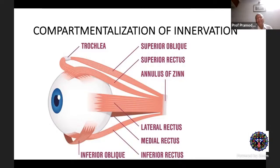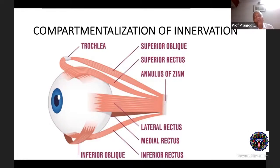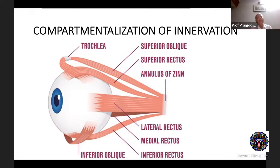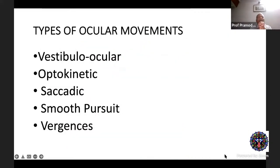This slide shows the extraocular muscles. An important point is the compartmentalization of innervation, particularly in the lateral rectus — which has superior and inferior compartments — and the superior oblique, which has anterior and posterior compartments. The same applies to the inferior oblique and superior rectus. For the inferior rectus this is not fully known. This compartmentalization can affect the clinical picture: for example, a sixth nerve palsy may cause predominantly torsional issues, or a fourth nerve palsy may produce only torsional or only vertical/abducting effects depending on which fibres are affected.